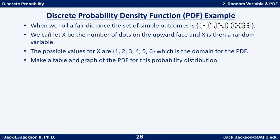Here's an example: when we roll a fair die once, the set of possible outcomes is shown here, which are the actual dice rolls. If we let X be the number of dots on the upward face, then X is a random variable. The possible values for X are 1, 2, 3, 4, 5, and 6. Technically you don't get a 4, you get this face up that has 4 dots, but we can refer to that by the random variable X equals 4.